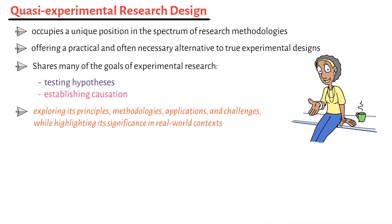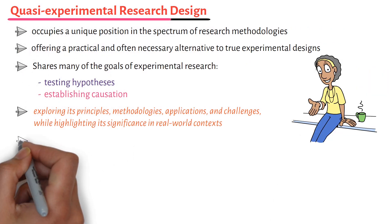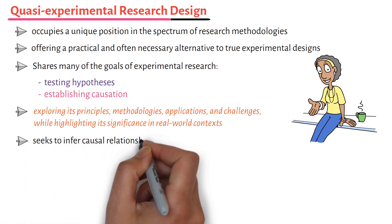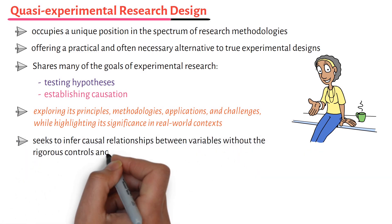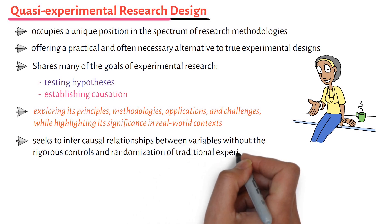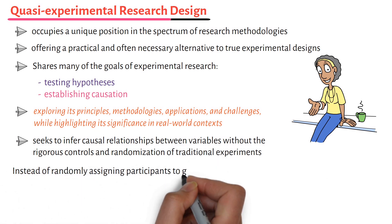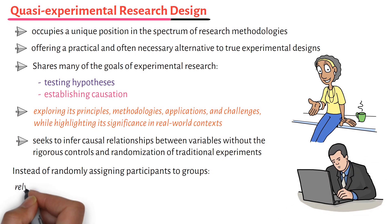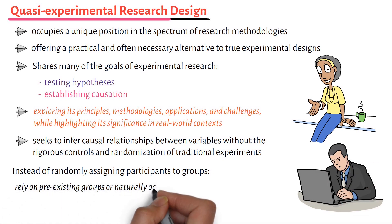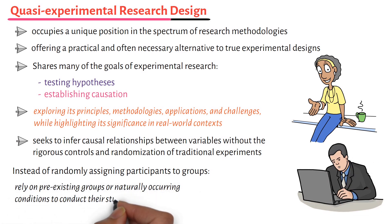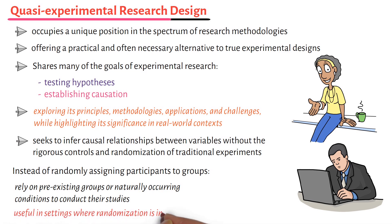At its heart, quasi-experimental research seeks to infer causal relationships between variables without the rigorous controls and randomization of traditional experiments. Instead of randomly assigning participants to groups, researchers rely on pre-existing groups or naturally occurring conditions to conduct their studies. This feature makes quasi-experimental designs particularly useful in settings where randomization is impractical, unethical, or impossible.